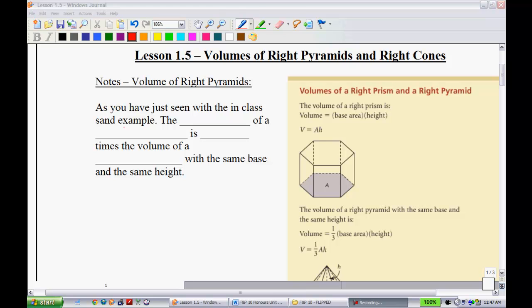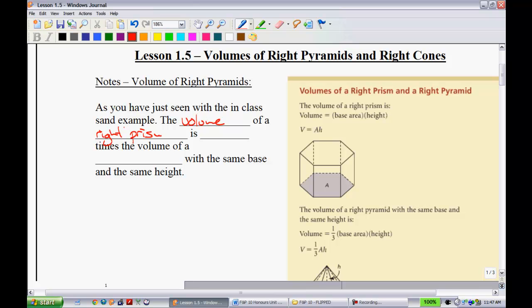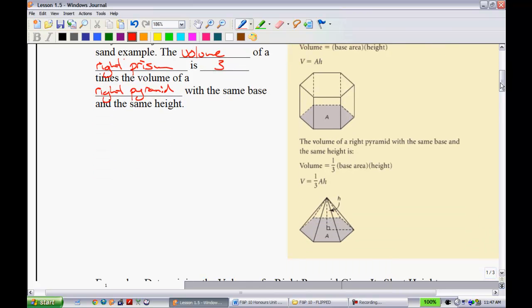Hopefully we've already done an example involving some sand. Now we're going to push on. So the volume of a right prism, I know for a fact you did this in grade 8, is three times the volume of a right pyramid with the same base and the same height. Looking at this little example here, assuming that the height is the same on both of these, the base area is the same, you can fit basically three of those inside of that object. So you're going to see how the formulas are related.